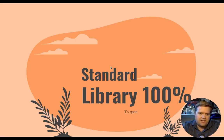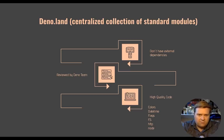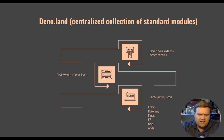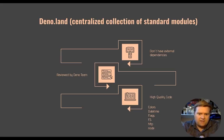So I mentioned everything is decentralized, but they did have a standard library, which is pretty good. Their standard library has no external dependencies. It's reviewed by the Deno team and it's high quality code. That's on the deno.land website — they have their own collection of standard modules they recommend. You can get third-party modules to work as well. Right now they have things like colors, datetime, flags, and an HTTP module. By the way, if you want to connect to a website or do an HTTP request, they have fetch built in. If you've ever used Node and tried to use fetch, you can't — you have to download some kind of library. It's actually built into Deno, which is nice, but they also have HTTP as well.